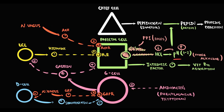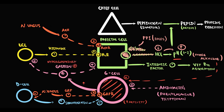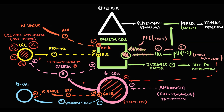Another important side effect is related to oncogenesis. The problem with more alkaline intragastric pH is that it stimulates G cells to produce more gastrin, creating hypergastrinemia. Gastrin stimulates the growth and proliferation of enterochromaffin-like cells, so in response to such strong stimulation, enterochromaffin-like cells undergo hyperplasia, and hyperplasia of enterochromaffin-like cells increases the risk of neuroendocrine tumor.